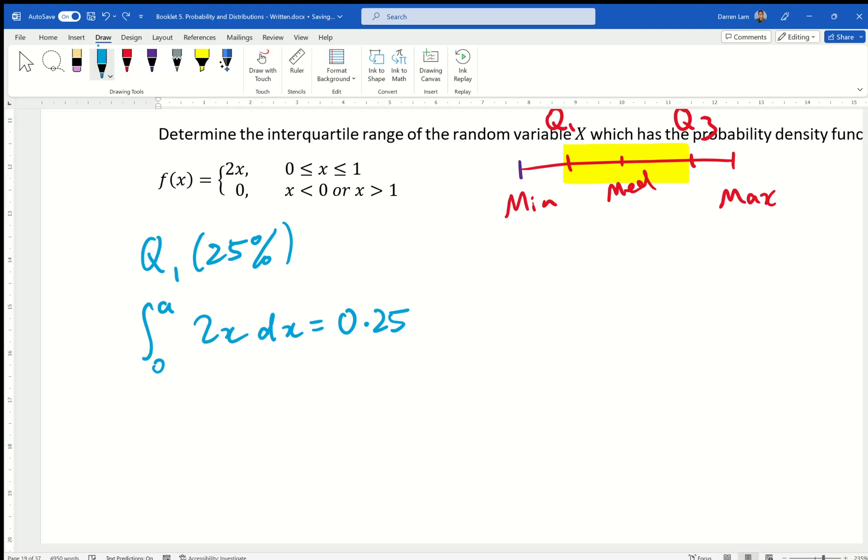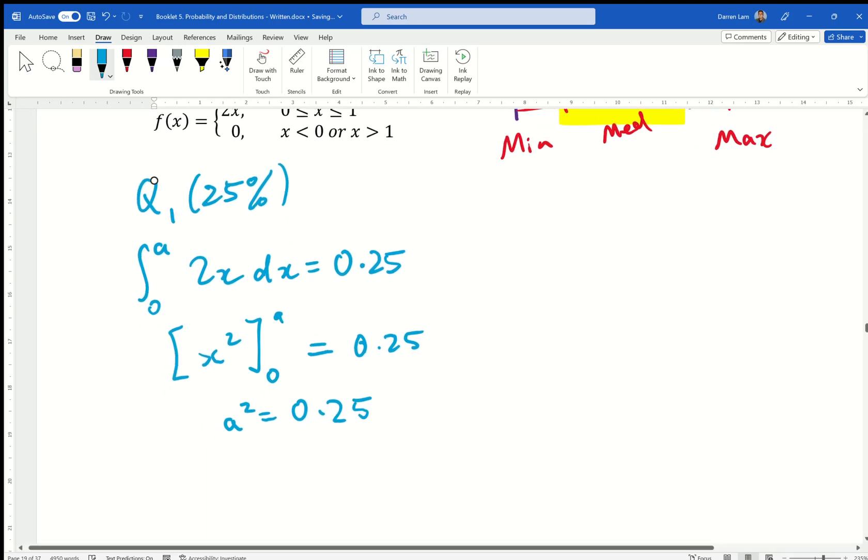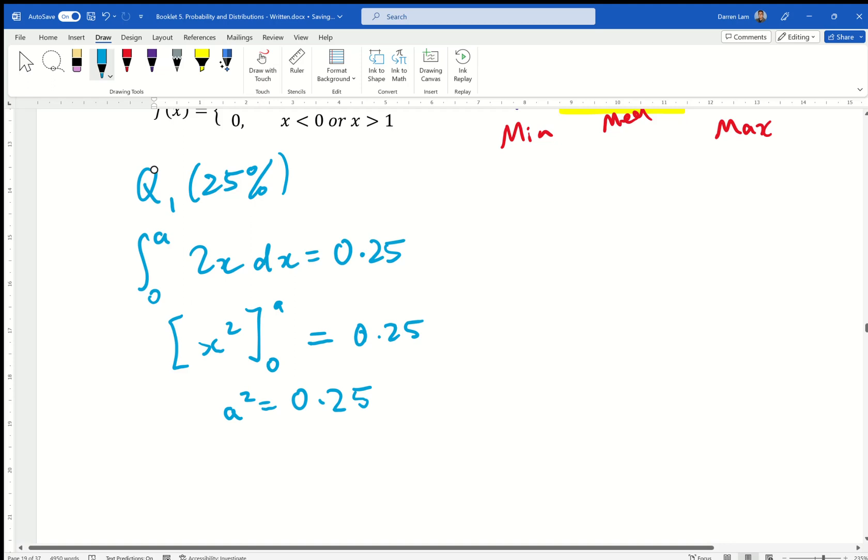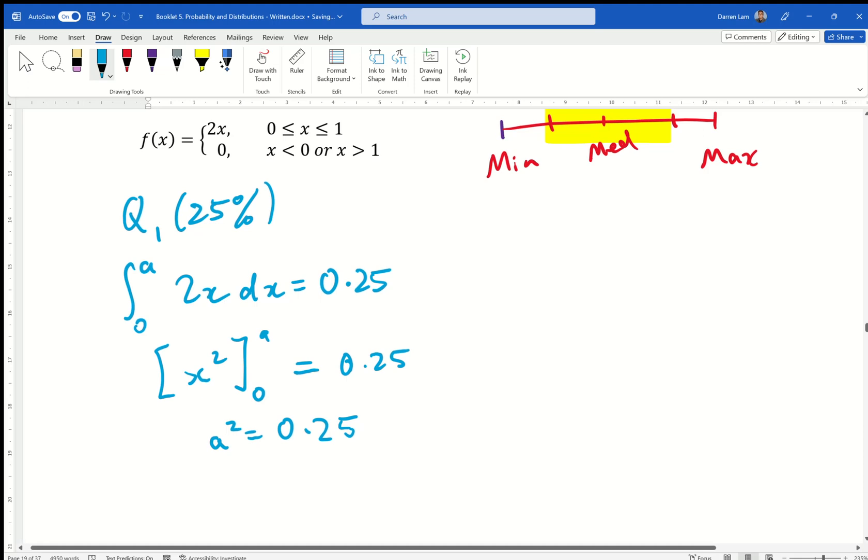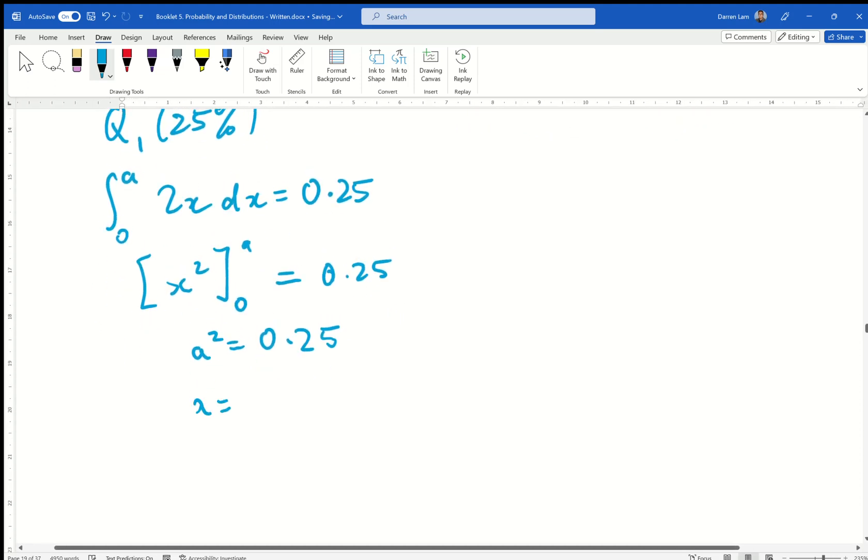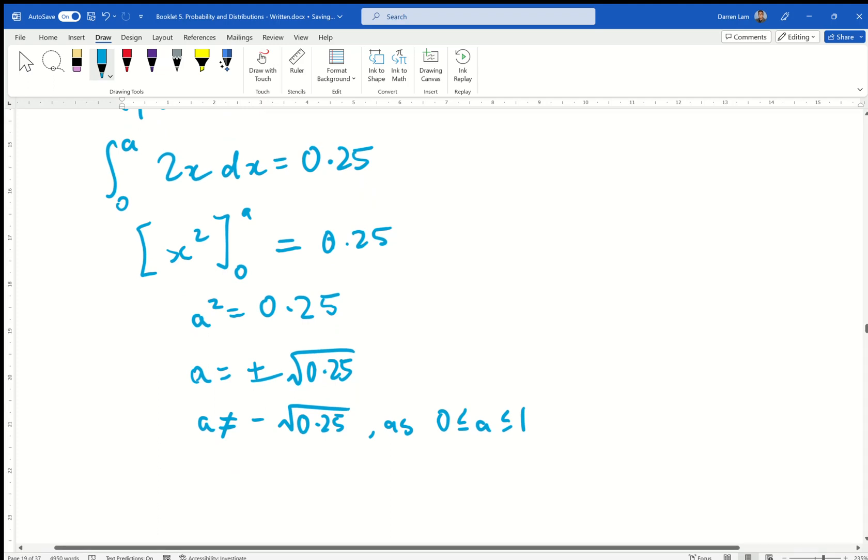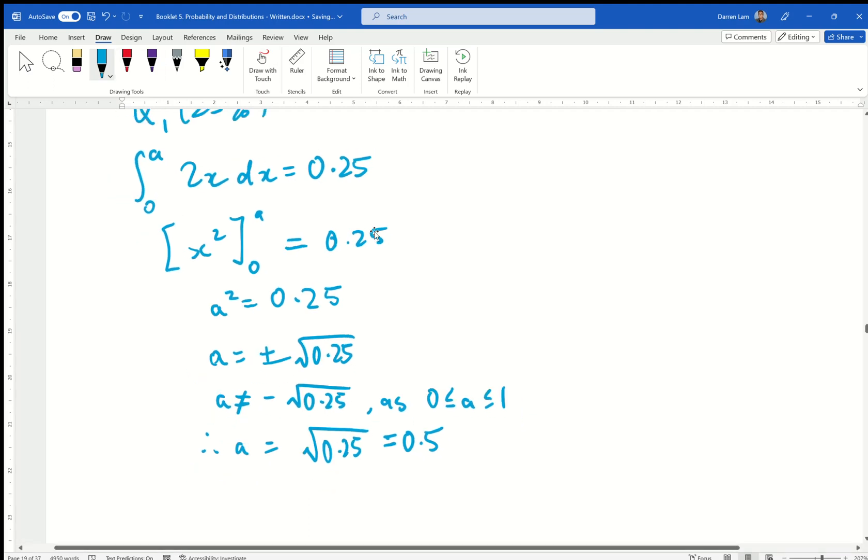So, that becomes when you integrate it, of course, that's x squared from 0 to A equals 0.25. Which means that A squared equals 0.25. And, well, A can't be plus or minus the square root of 0.25. Because, well, it has to go from 0 to 1. So, I'm still going to write it out. And then I'll explain to the assessor that, well, I'm saying it can't be. So, I'll say A equals to plus or minus the square root of 0.25. Where A cannot equal to negative 0.25 square root. As A must be between 0 and 1. Therefore, A equals to the square root of 0.25, which is just 0.5.